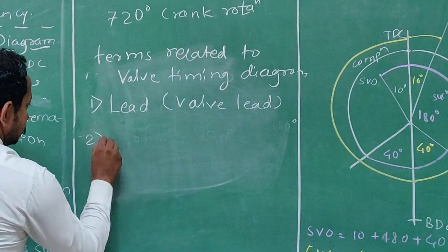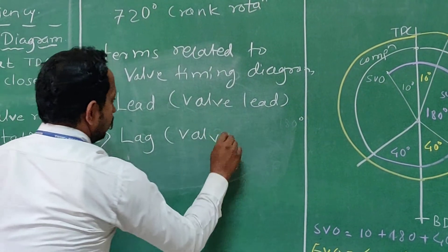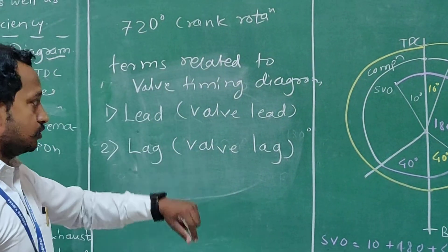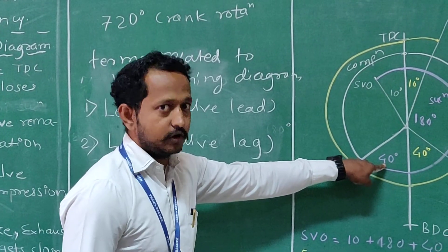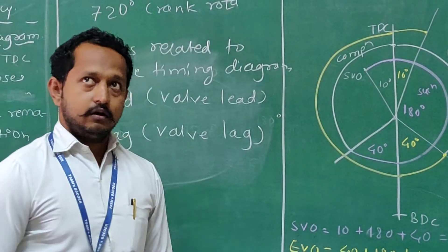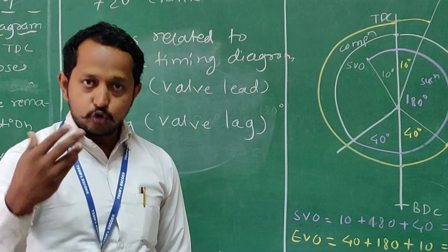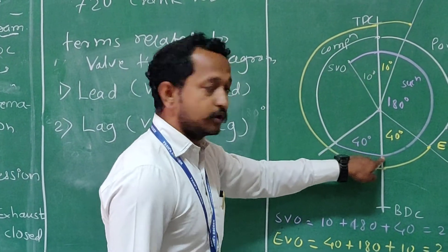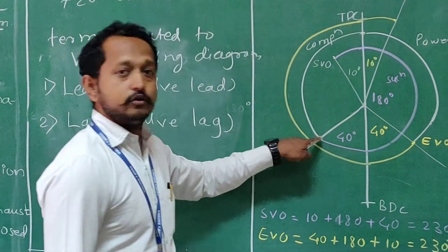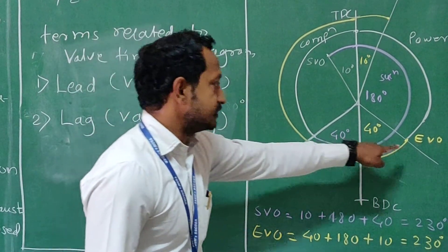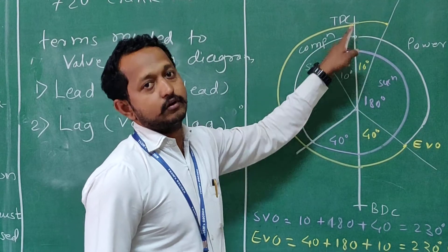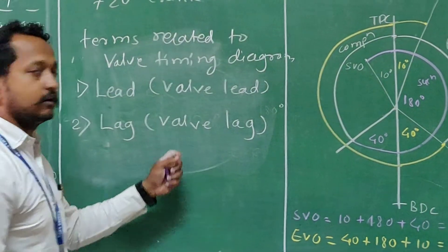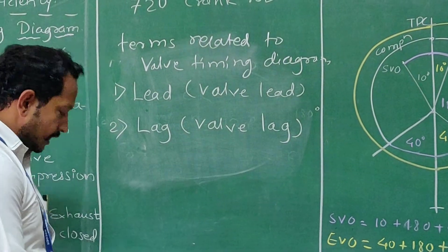Similarly, the next term is lag, or called as valve lag. Lagging is just getting behind, getting delayed. This term is more applicable or by default applicable for the inlet valve or suction valve. The valve lag is defined as post-closure of a valve beyond its theoretical closure. Here the suction valve has to be closed at BDC, but for further induction of charge, we are closing it 40 degrees after BDC. Whereas the exhaust valve has to be closed at TDC, but we are keeping it open for the next 10 degrees after TDC. So this lag by default refers to the suction valve.